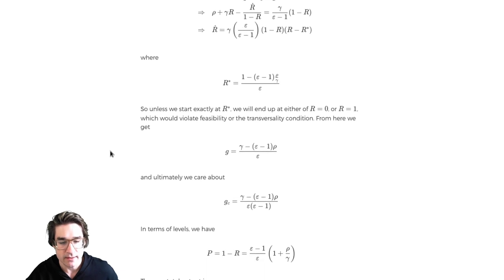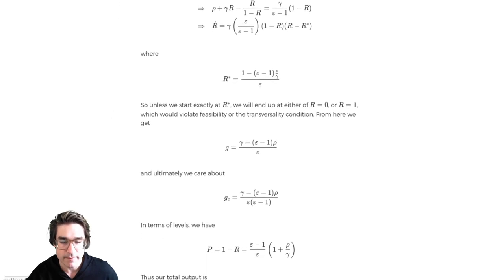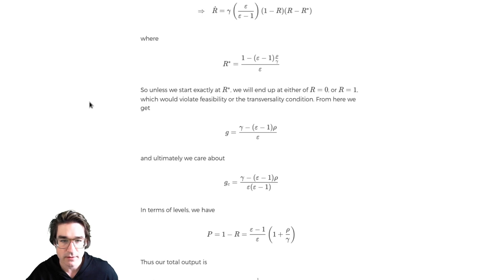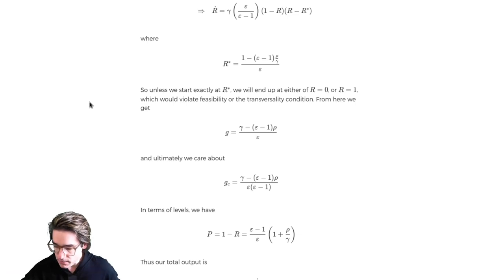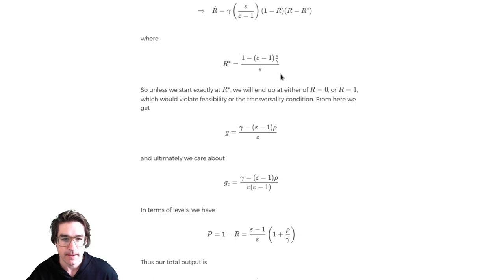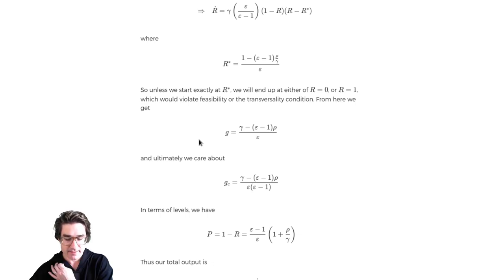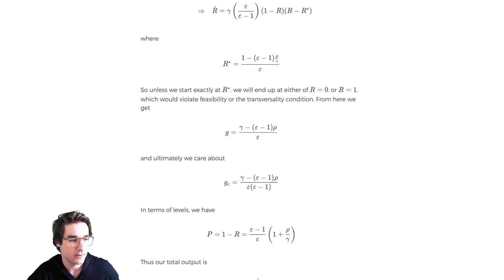The only thing to do at that point is work back up. We found the fundamental variable of equilibrium — the research fraction R — and then we just work back up the chain to get other stuff we might be interested in. We might be interested in the growth rate of the number of varieties itself. We can get to the growth rate from R just by multiplying by gamma.